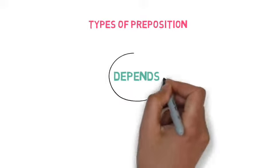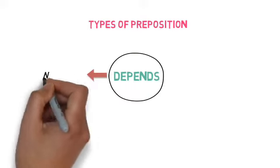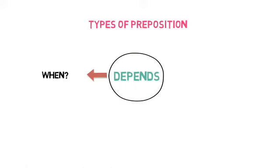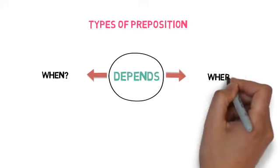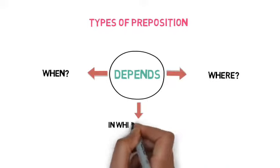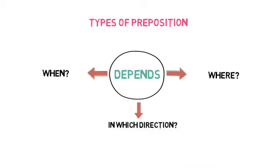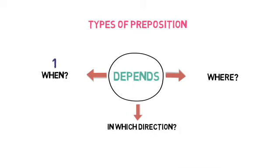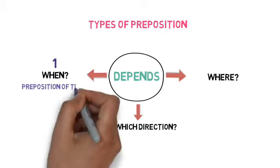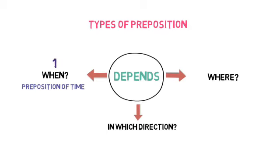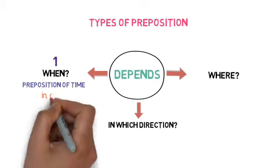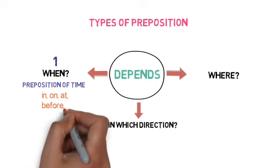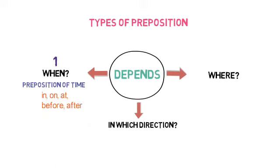Now we are going to know about the types of preposition, and it depends on three conditions. The conditions are: number one — when; number two — where; and number three — in which direction. The preposition that shows us time is called preposition of time.